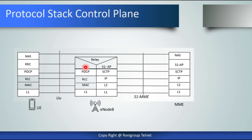Then we have the RRC layer, followed by the PDCP — Packet Data Convergence Protocol — which performs IP header compression and decompression of IP packets. Then we have the Radio Link Control protocol, which supports acknowledged mode transfer of user data between the UE and eNodeB. Then we have the MAC layer — the Medium Access Control layer — which is responsible for Hybrid ARQ retransmission requests. HARQ is used for error correction and retransmission, as well as priority handling and transport format selection.